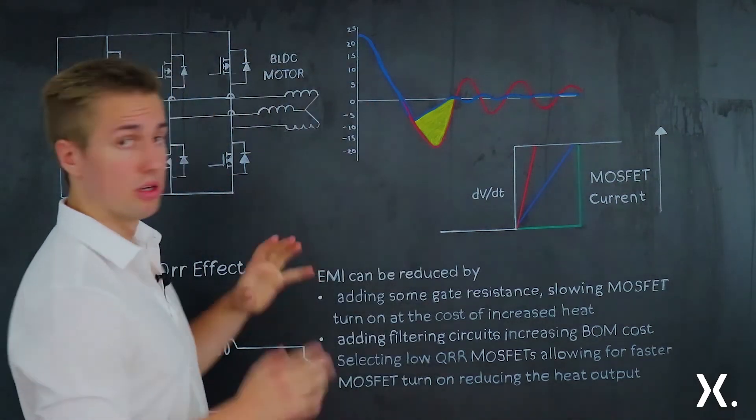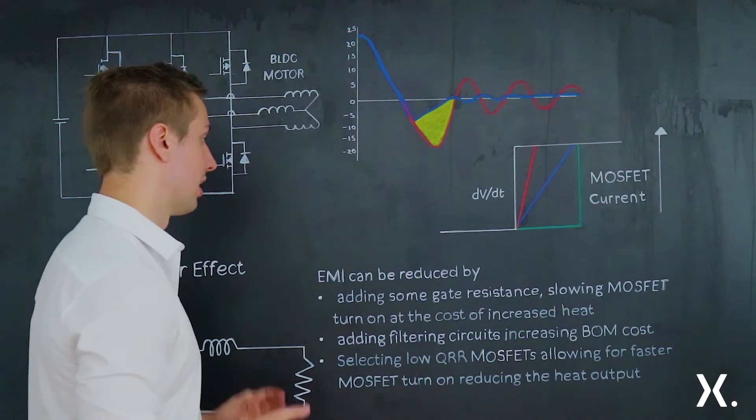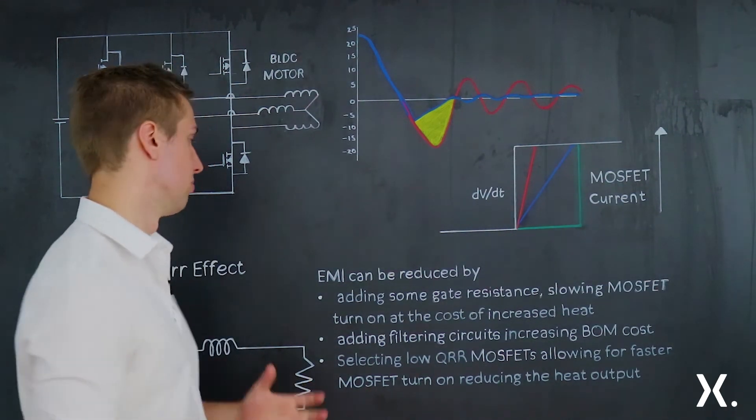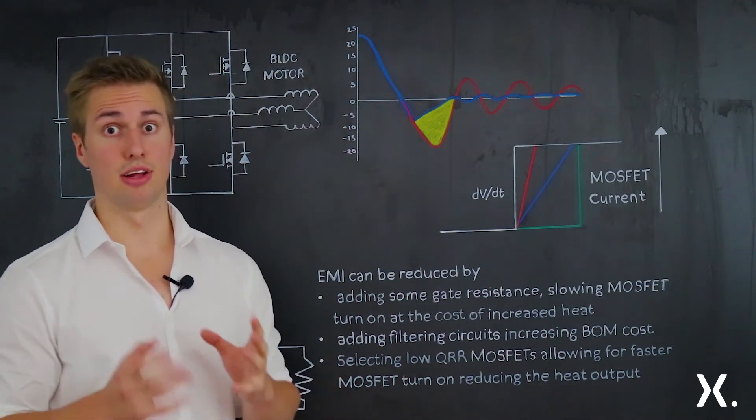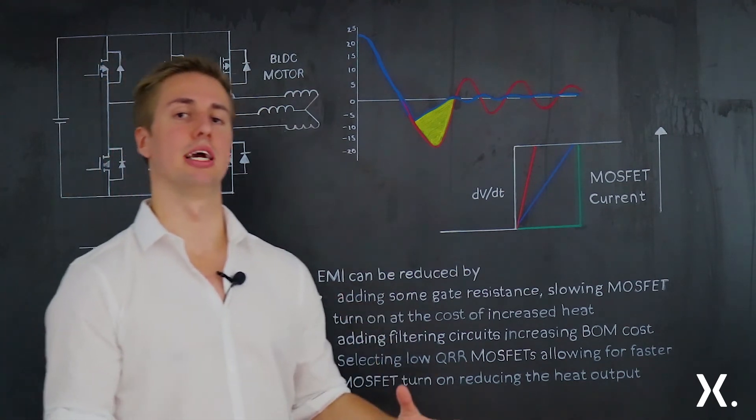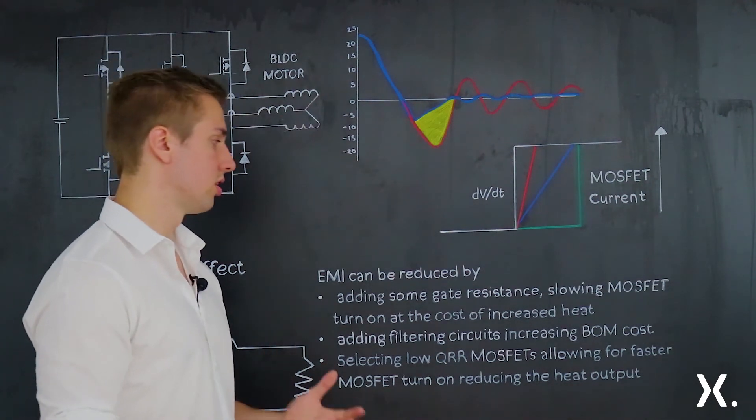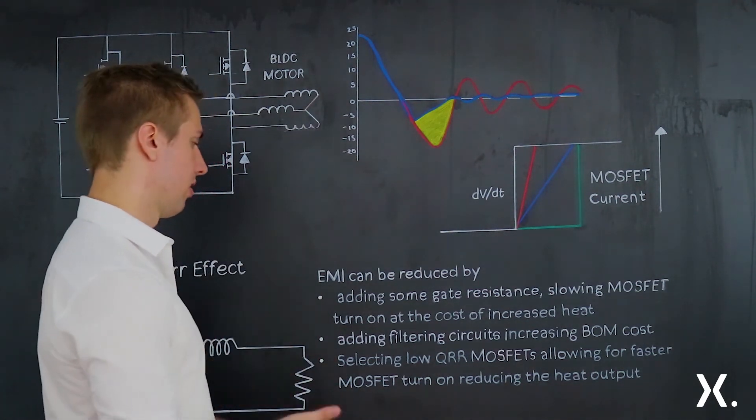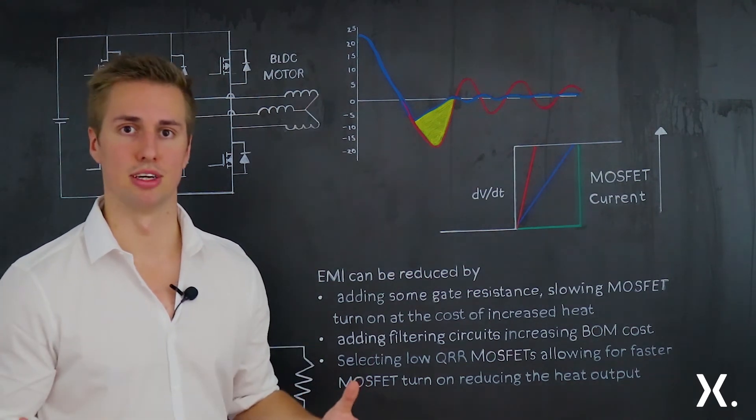So, just going over what we've discussed here, EMI can reduce by several factors. You can add a gate resistor, which slows the MOSFET turn-on at the cost of increasing the heat output. You can add filtering circuits, which increase the bond cost and the board space needed for the design. Or you can just select the low QRR MOSFET, allowing for a faster MOSFET turn-on and reducing the heat output without many downsides.